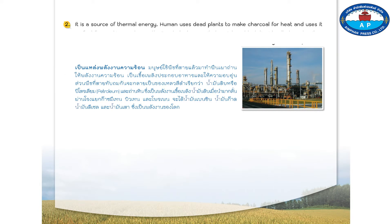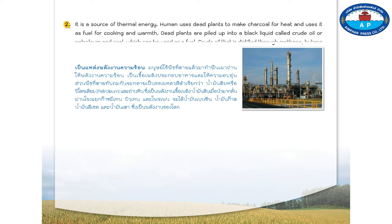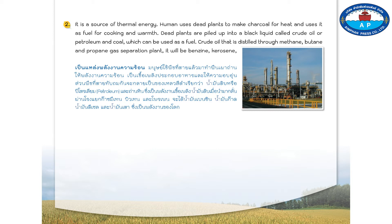Number two, it is a source of thermal energy. Humans use dead plants to make charcoal for heat and use it as fuel for cooking and warmth. Dead plants are piled up into a black liquid called crude oil or petroleum and coal, which can be used as fuel. Crude oil that is distilled through methane, butane, and propane gas separation will produce benzene, kerosene, diesel, and fuel oil, which are the energy of the world.